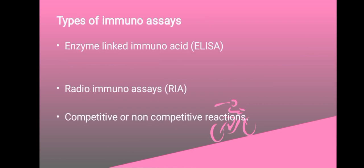There are different types of immunoassays. The first one is enzyme-linked immunoassay, called ELISA, in which an enzyme antibody labeled reagent reacts with an antigen of interest. In this type, a color change indicates the reaction.